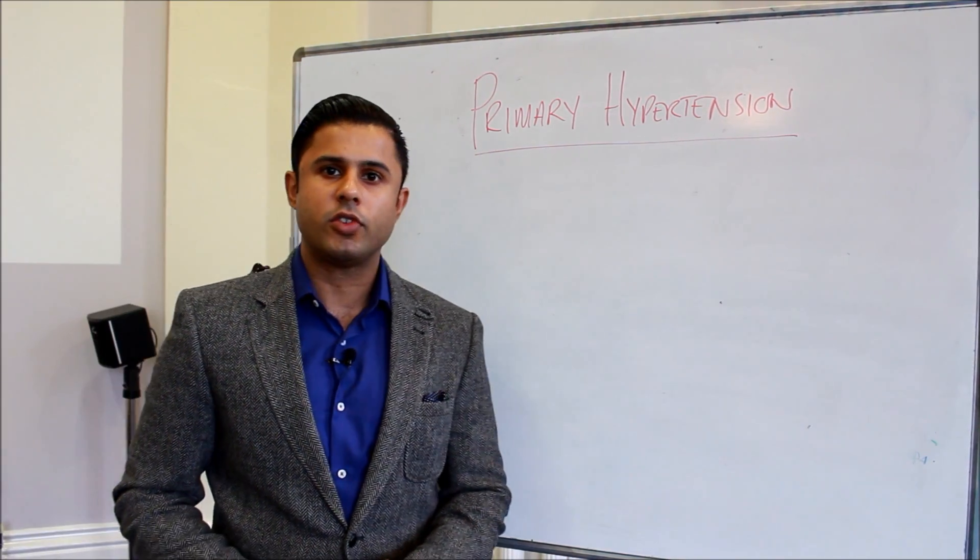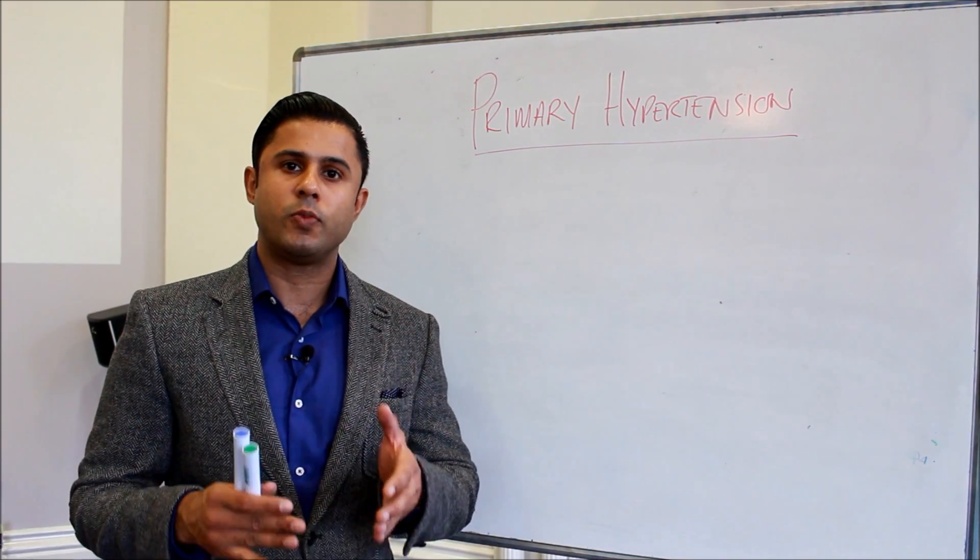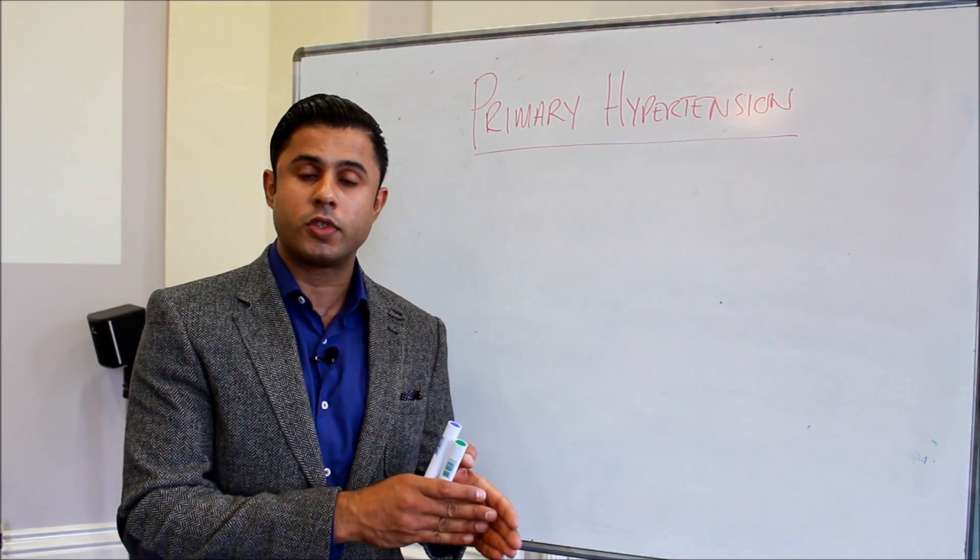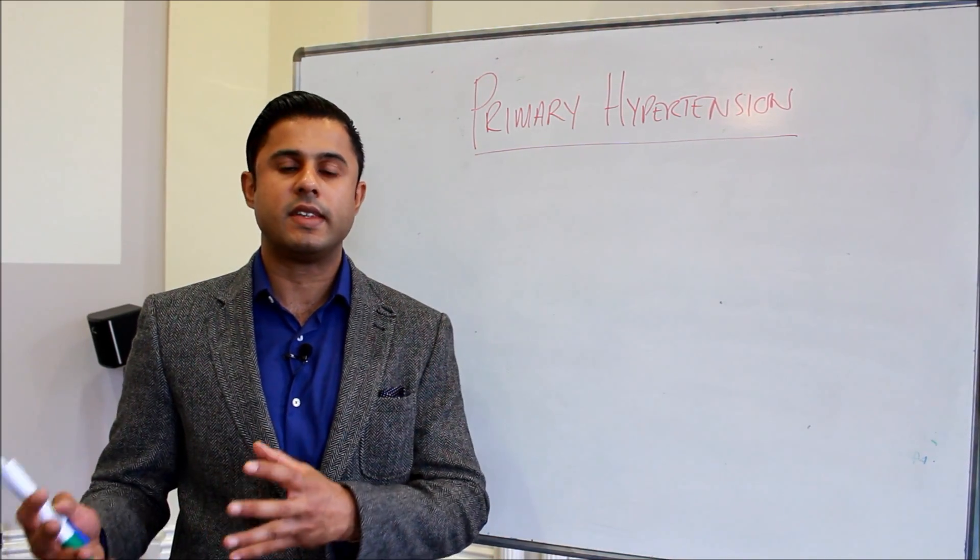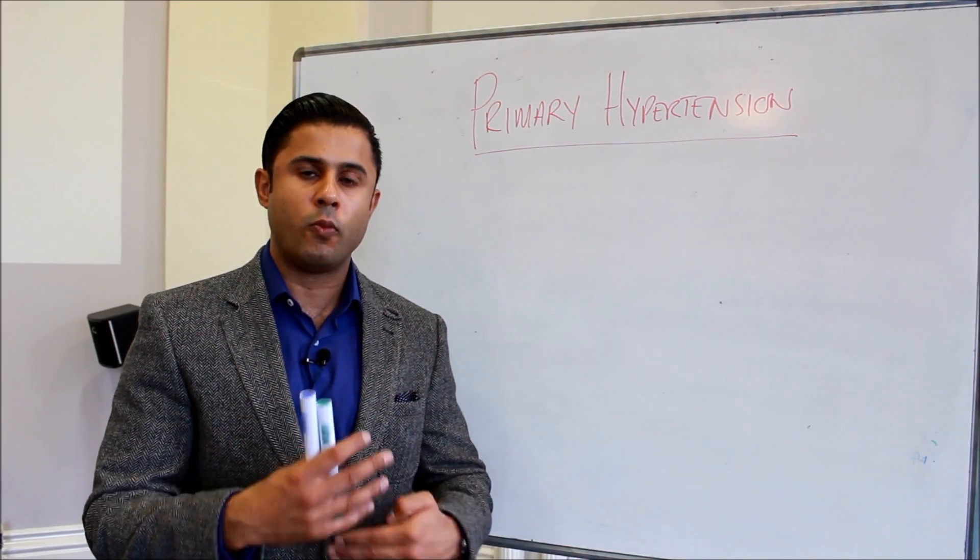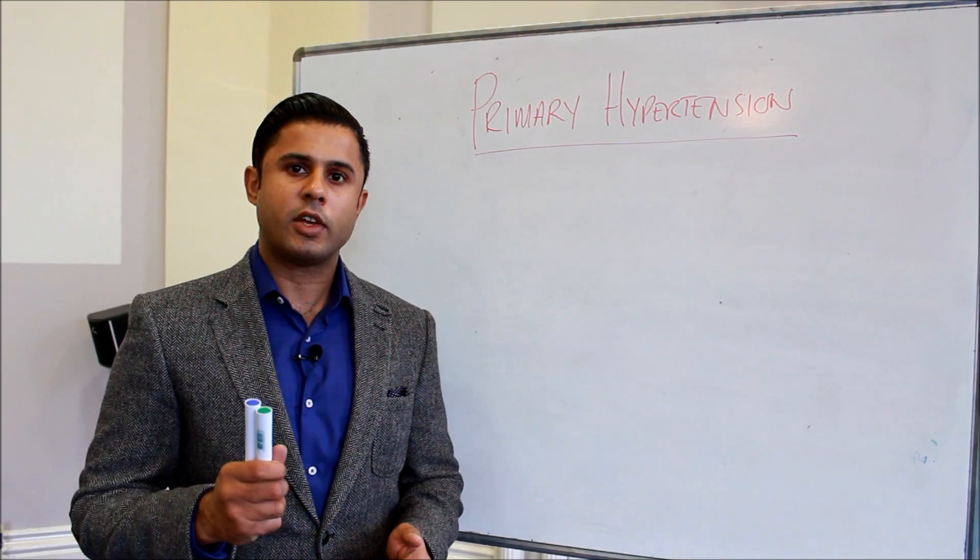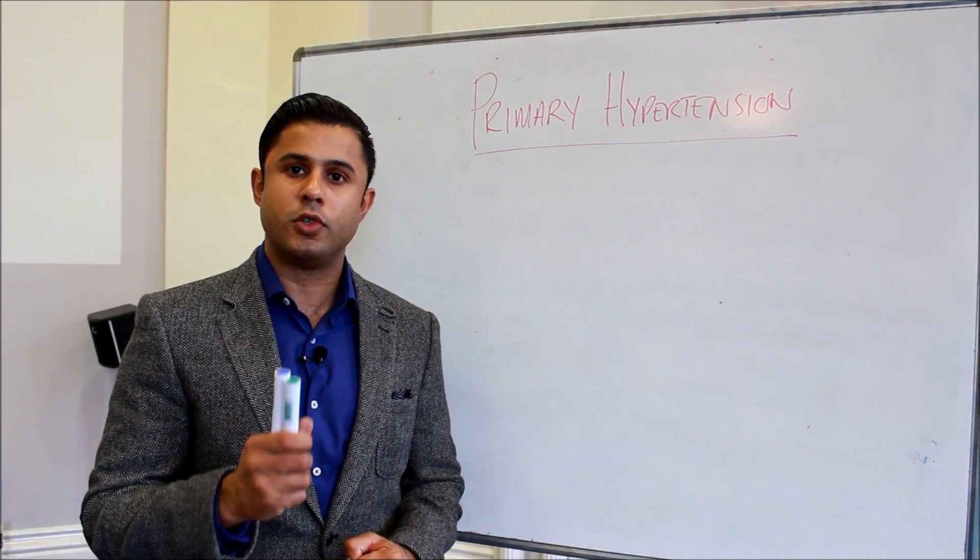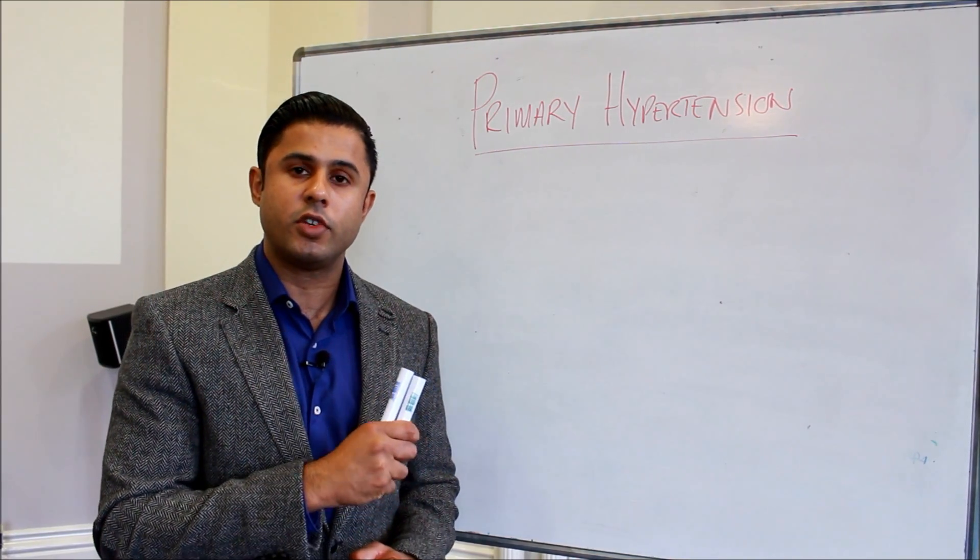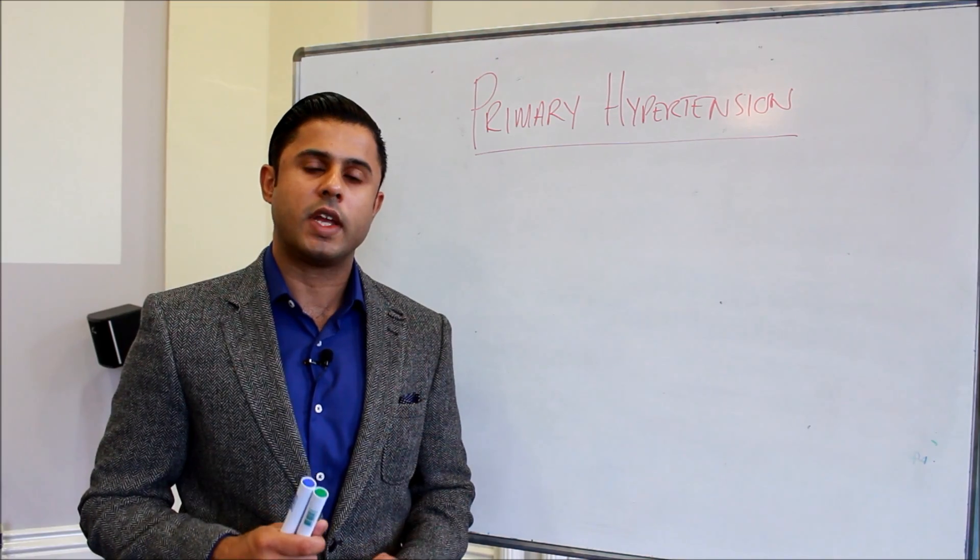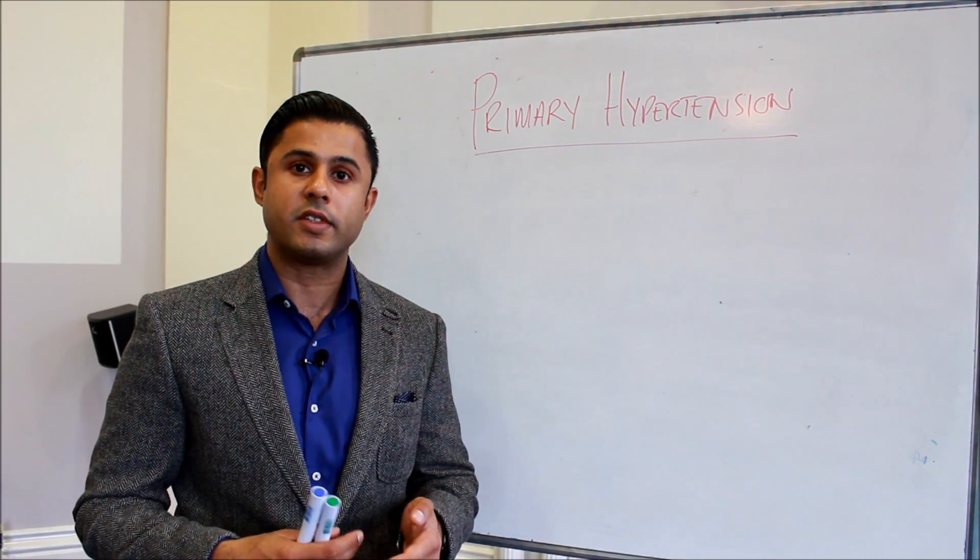Primary hypertension is defined as hypertension which does not have a known cause, so there's no factor which can be teased out to determine why somebody has the hypertension. There could be a genetic component, but the most important cause is being overweight or obese.